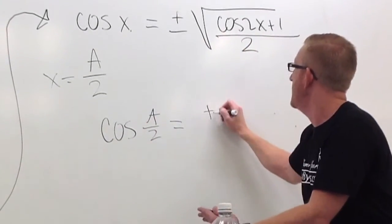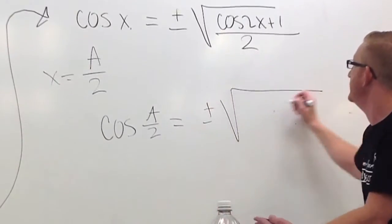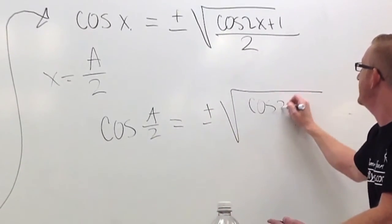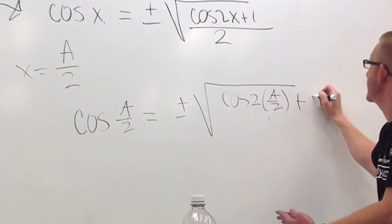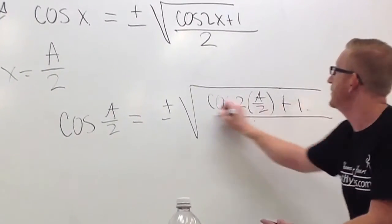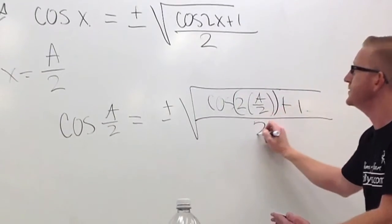And then that's going to be equal to plus and minus the square root of the cosine of 2 times a over 2, and then plus 1 all over deuces.